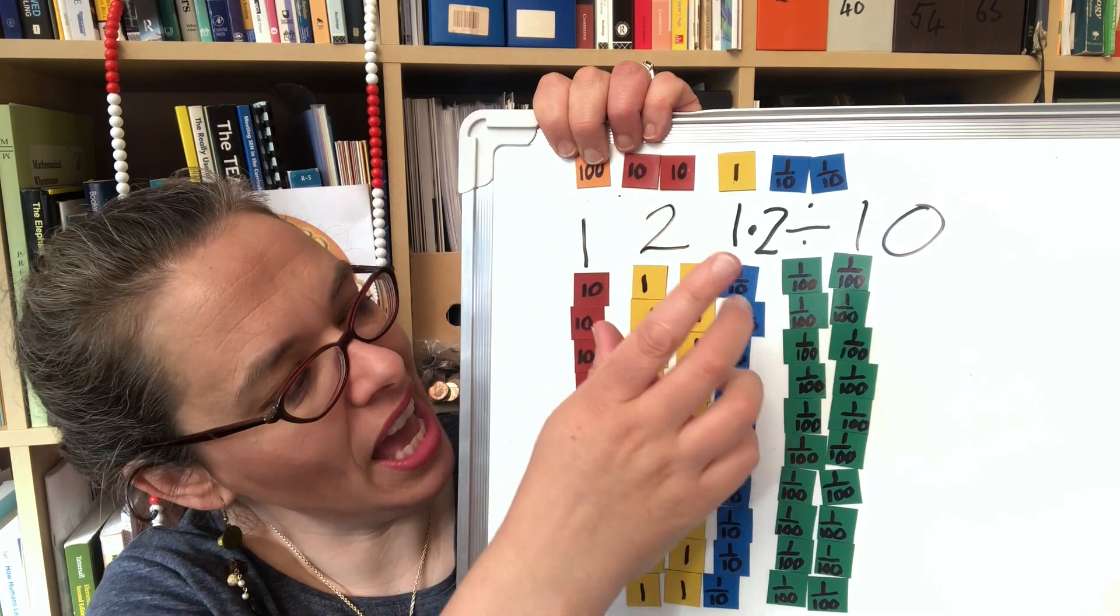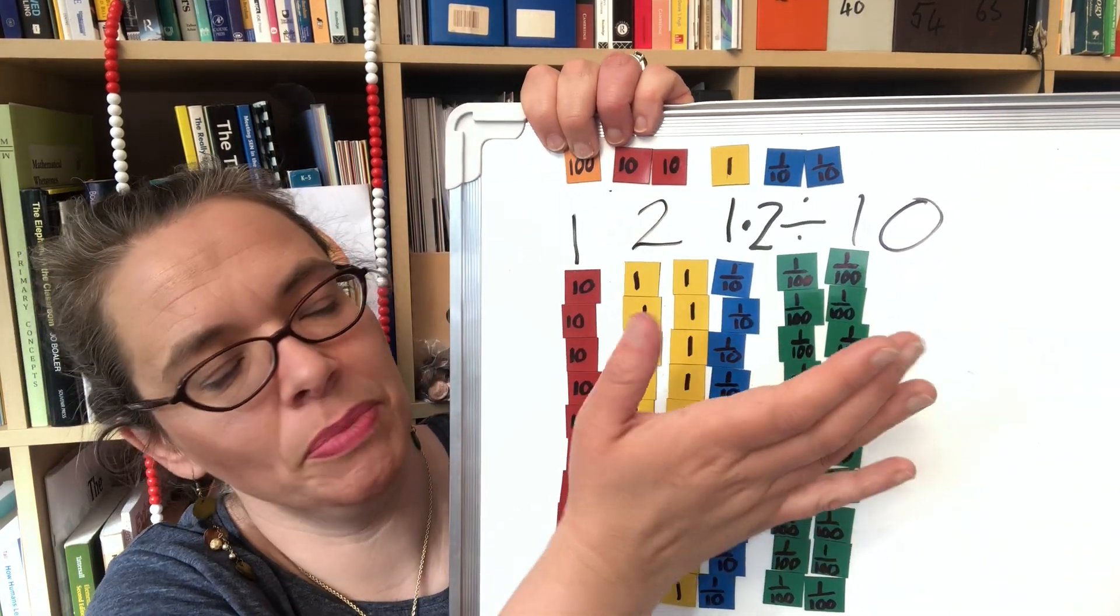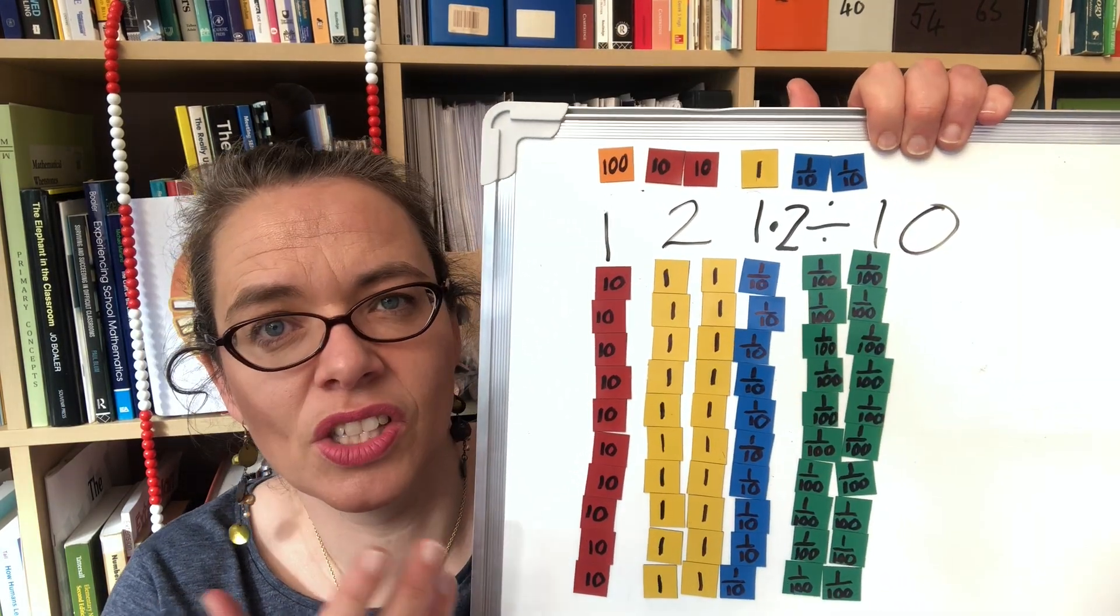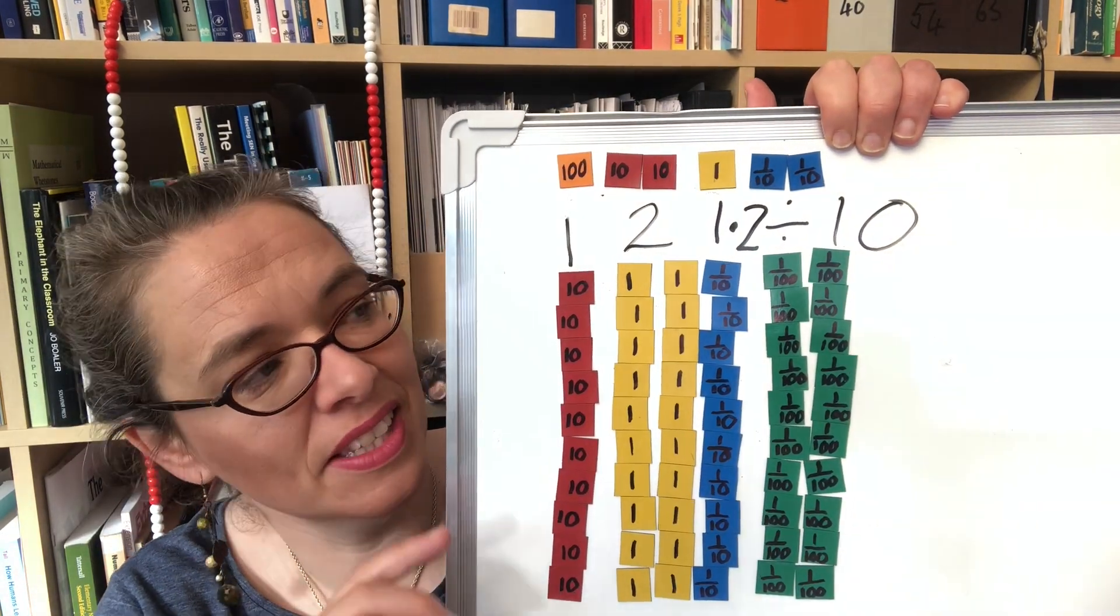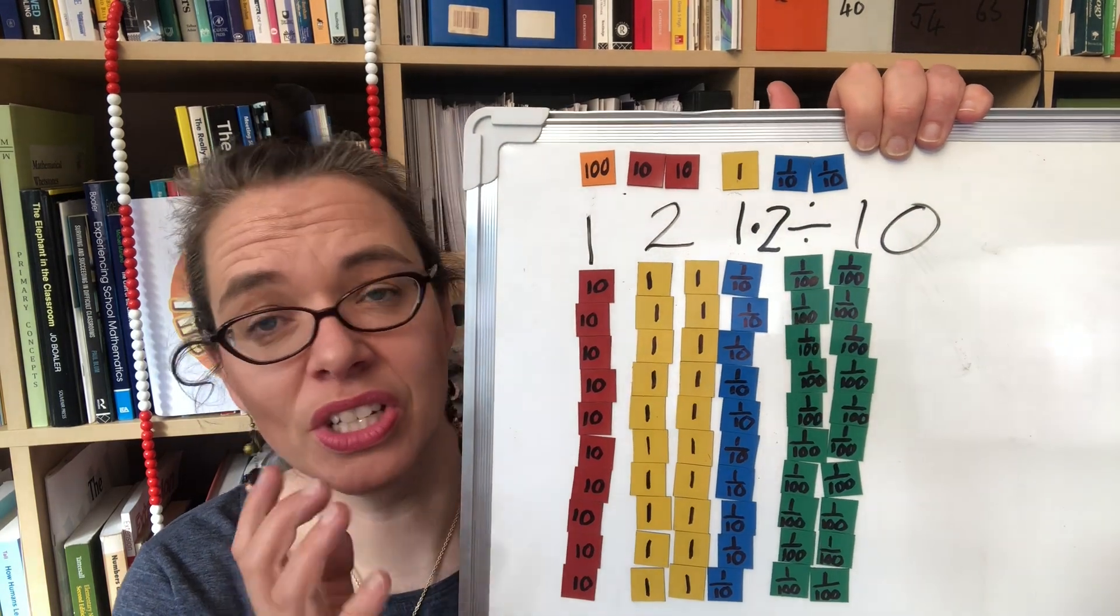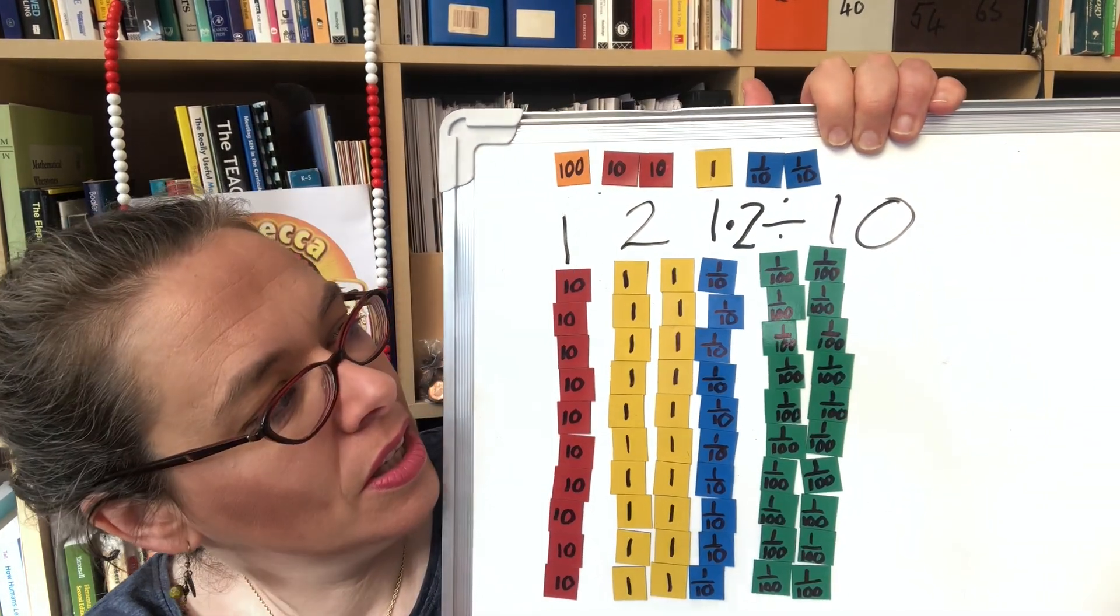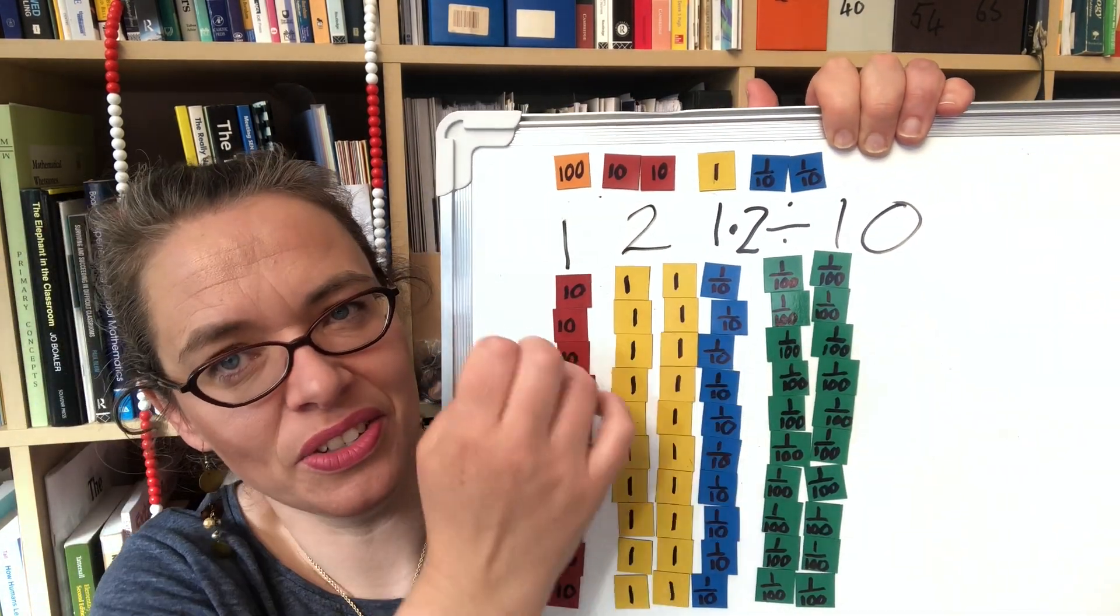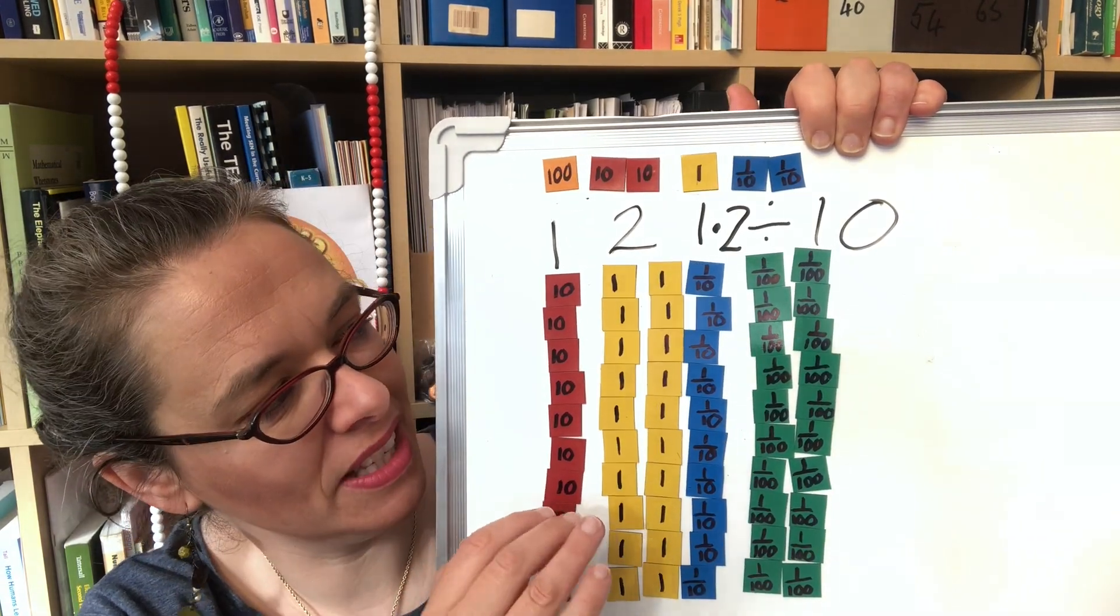And we can also generalize this to say that that's always going to be the case. For every place value counter in the original number you're going to get a place value counter in your answer that is one place to the right because when you split a place value counter into 10 equal parts you get something 10 times smaller which is the number in the next place in our decimal system. That's how it works. So we get the result that when you're dividing by 10 the digits move one place to the right and if the number ends in zero you can just knock off a zero and that happens. But if it doesn't end in a zero obviously you can't do that, you need to understand this deeper structure of moving one place to the right to divide by 10.